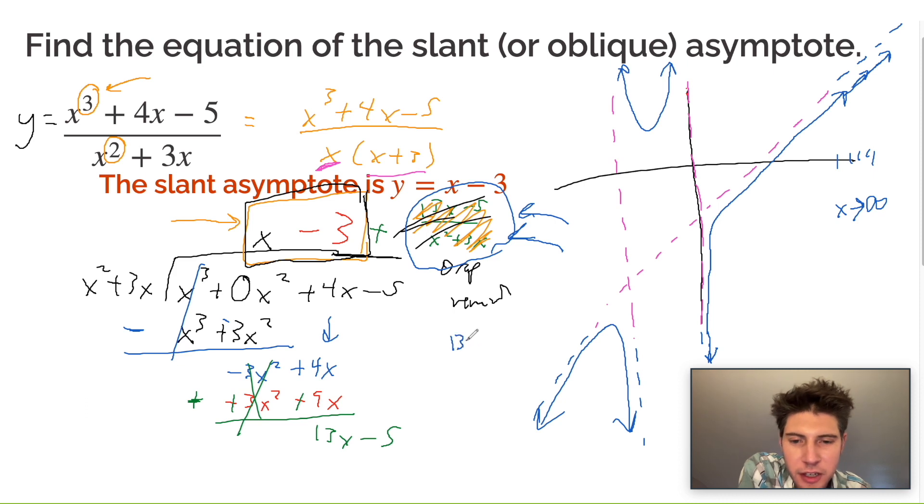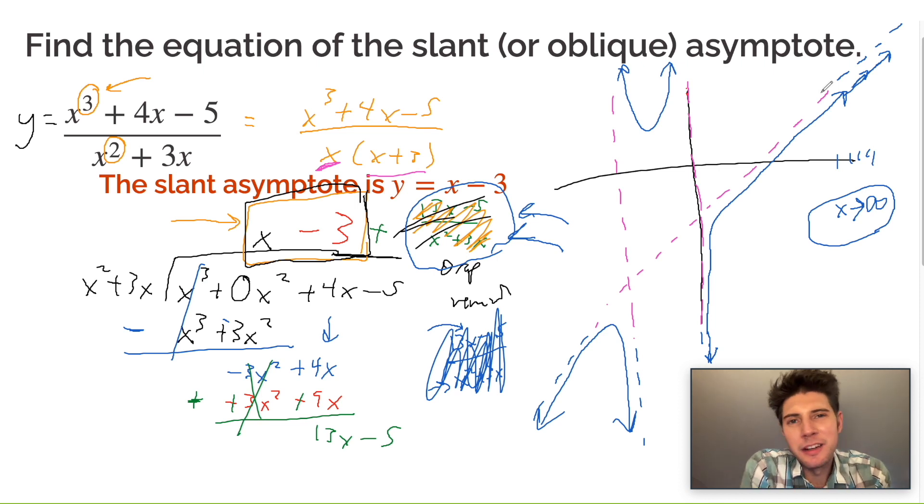The remainder was 13x minus 5 over x squared plus 3x. As we go to infinity with our x, this x squared is going to get so much larger than this x that it's just going to go away. And that's the idea. It's what is our thing approaching as we go to infinity. I may not have done a very good job explaining that. I'll leave it in the video in case people did understand it.